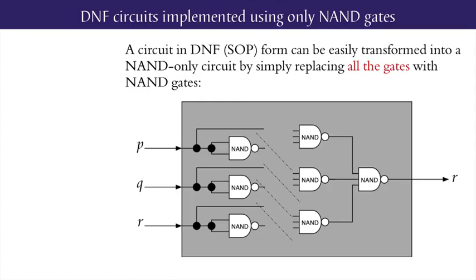This includes replacing a NOT gate with a two-input NAND fed with two branching copies of the input.